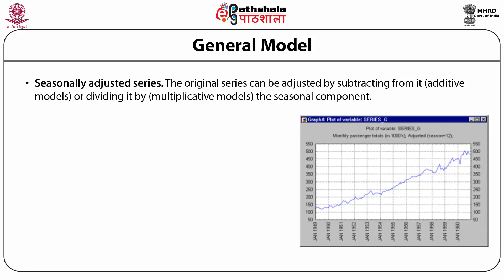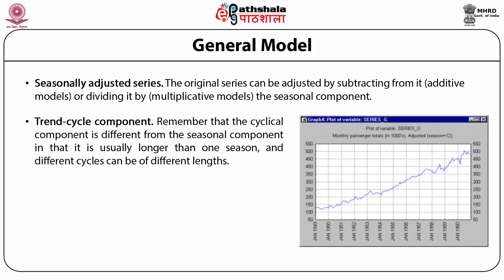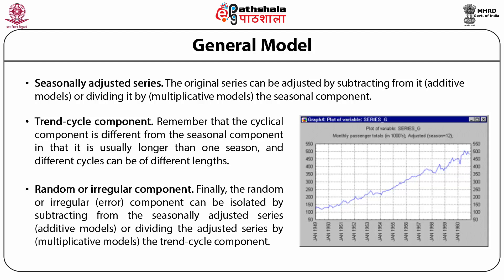In the seasonally adjusted series, the original series is adjusted by subtracting from it or dividing it by the seasonal component — the result is a seasonally adjusted series with the seasonal component removed. For the trend-cycle component, the cyclic component is usually longer than one season, and different cycles can be of different lengths. The combined trend and cyclic components can be approximated by applying a 5-point weighted moving average with weights 1, 2, 3, 2, 1 to the seasonally adjusted series. Finally, the random or irregular component can be isolated by subtracting from or dividing the seasonally adjusted series by the trend-cycle component.